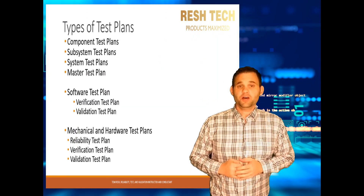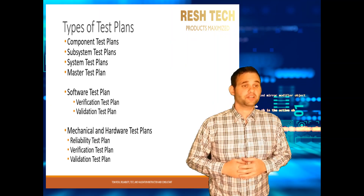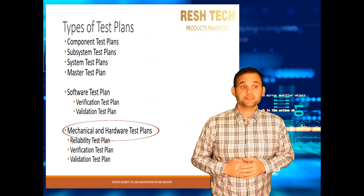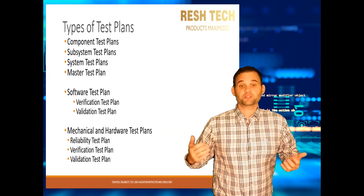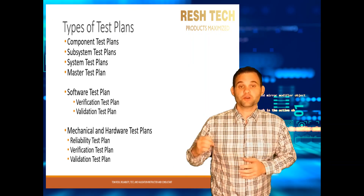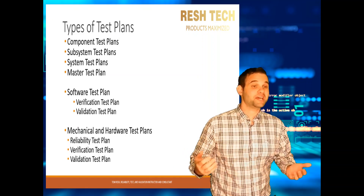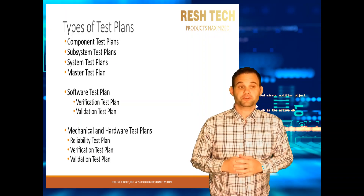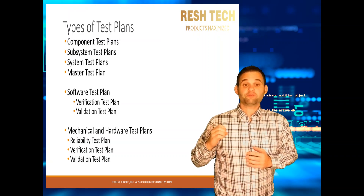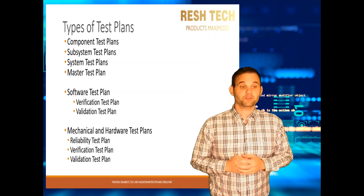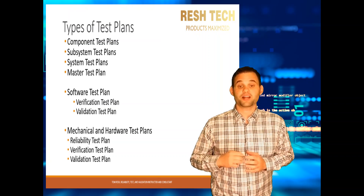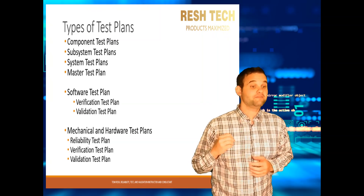At the component and subsystem level, the test plans can be broken down into two types: software test plans, and mechanical and hardware test plans. On the software side, test plans are typically validation or software test plans. I don't like to use the words reliability and software in the same sentence, and here's why: software failures are simply issues that were not identified during verification and validation testing, and it is just a matter of a customer finding an edge case that was not caught in verification and validation testing.